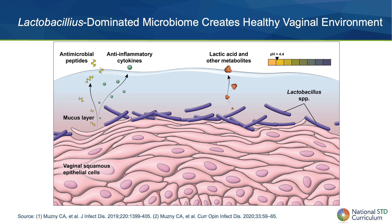The abundant vaginal lactobacilli produce lactic acid and other metabolites, which lower the vaginal pH. In this Lactobacillus-dominant microbiota, the vaginal epithelial cells produce antimicrobial peptides and anti-inflammatory cytokines. The conditions created in this healthy vaginal environment protect against invading pathogens and pathobionts.